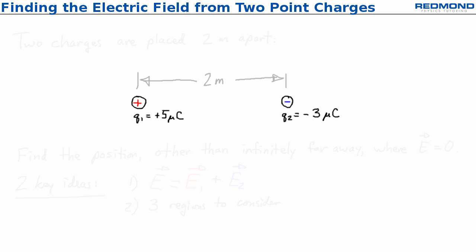First I'll look at some random point left of Q1. E1 points away from the positive Q1 to the left. E2 points toward the negative Q2 to the right.